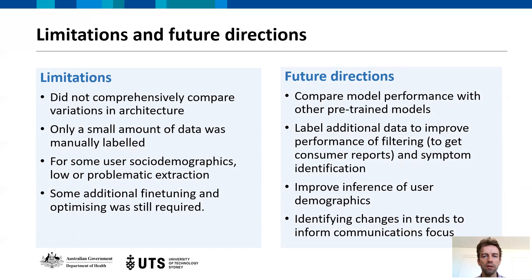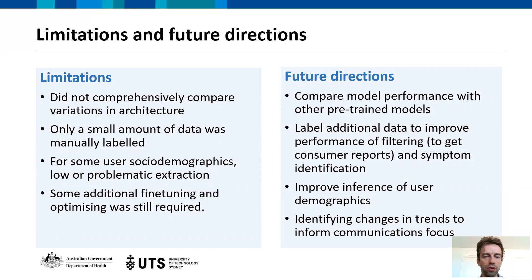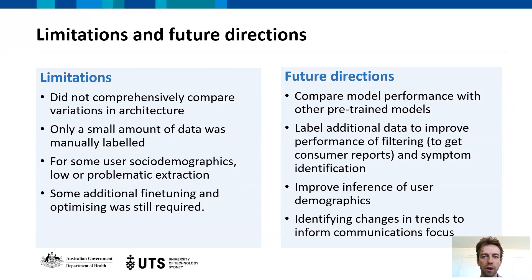Limitations: we didn't get much opportunity to compare different variations in architecture, and we had thoughts around possible different architectures for more efficiency. There's likely a lot of improvements possible through different architectures. We also didn't manage to do a huge amount of manual labeling, which would improve performance. Sociodemographic information is another substantial piece of work that could be done. Some additional fine-tuning and optimizing is still required. Future directions include comparing model performance with other pre-trained models, labeling additional data to improve filtering performance, and improving inference of user demographics.